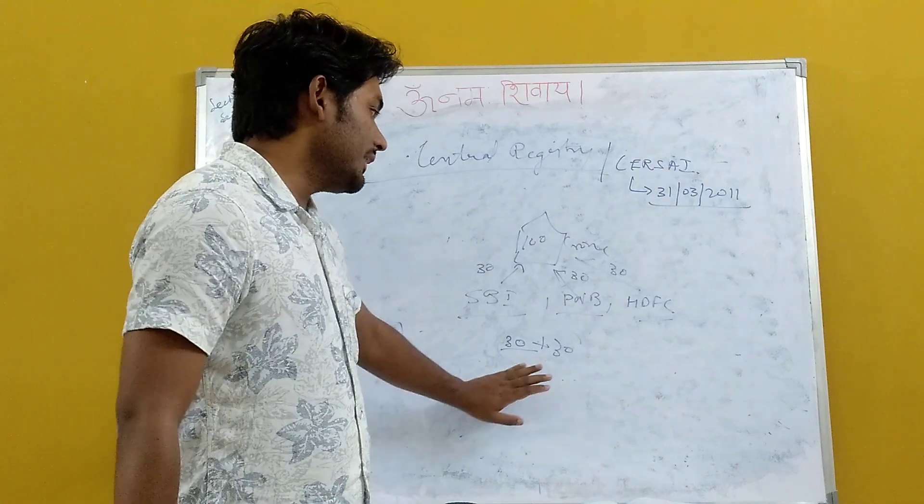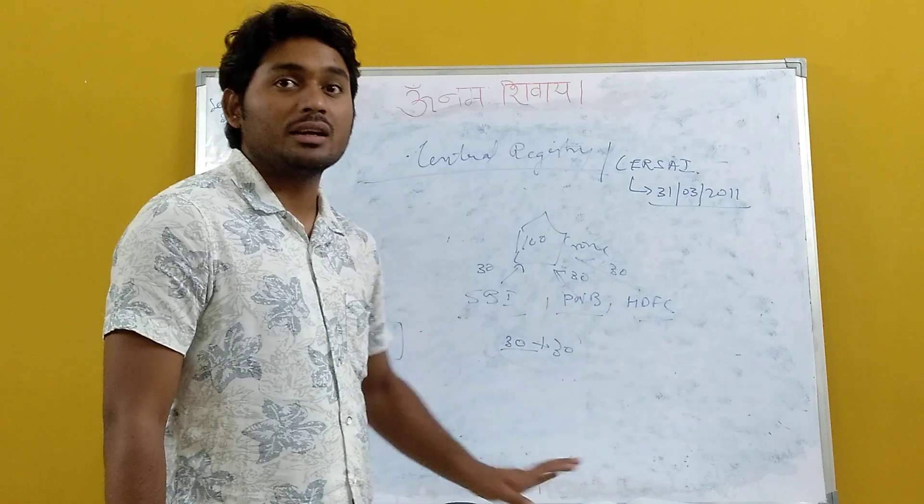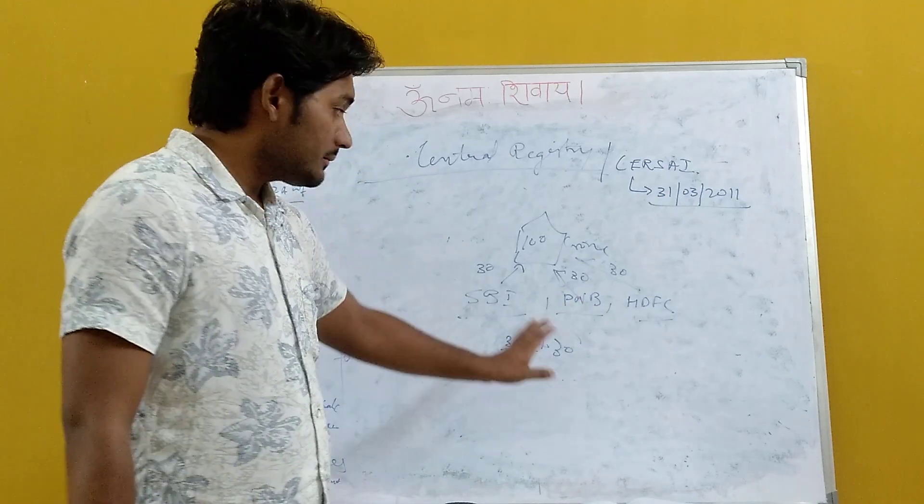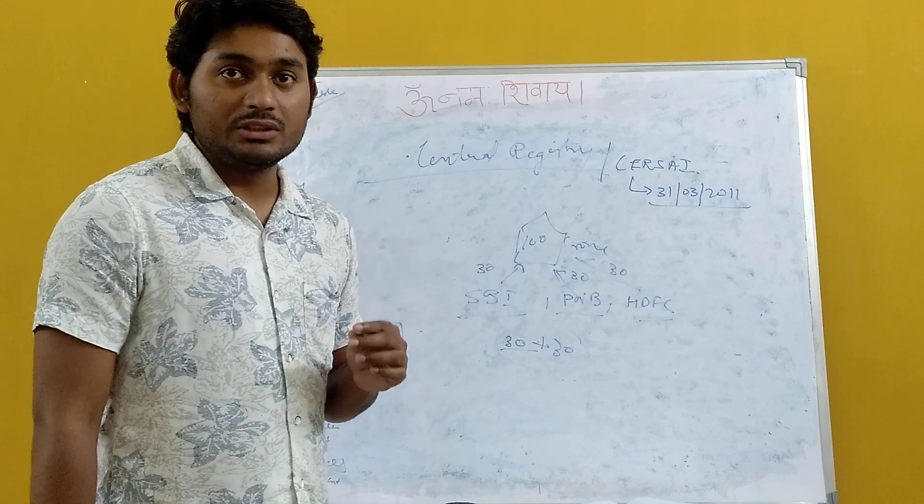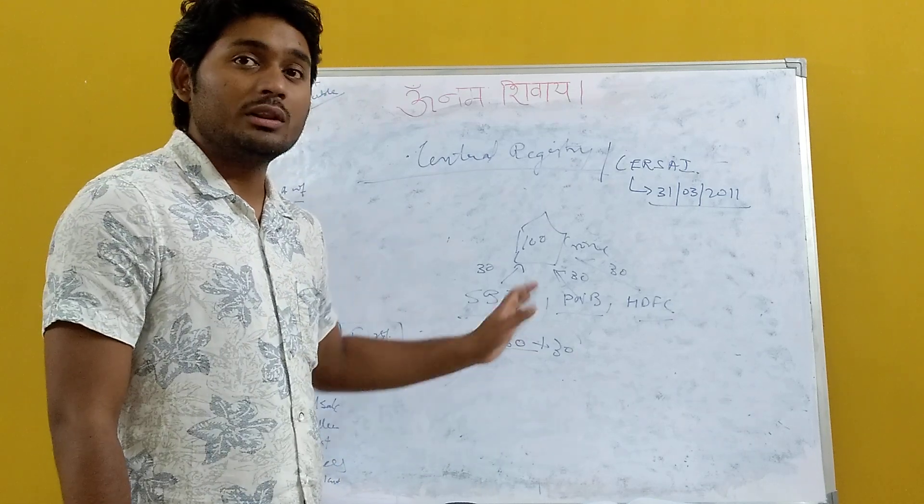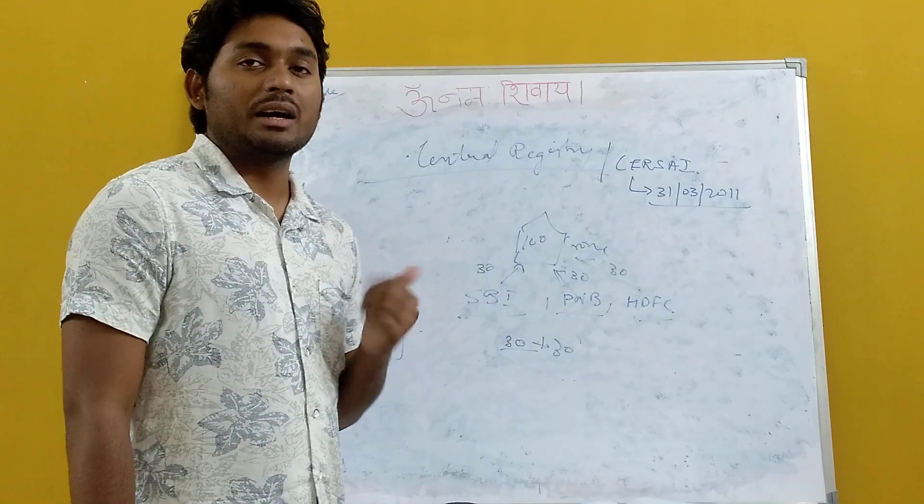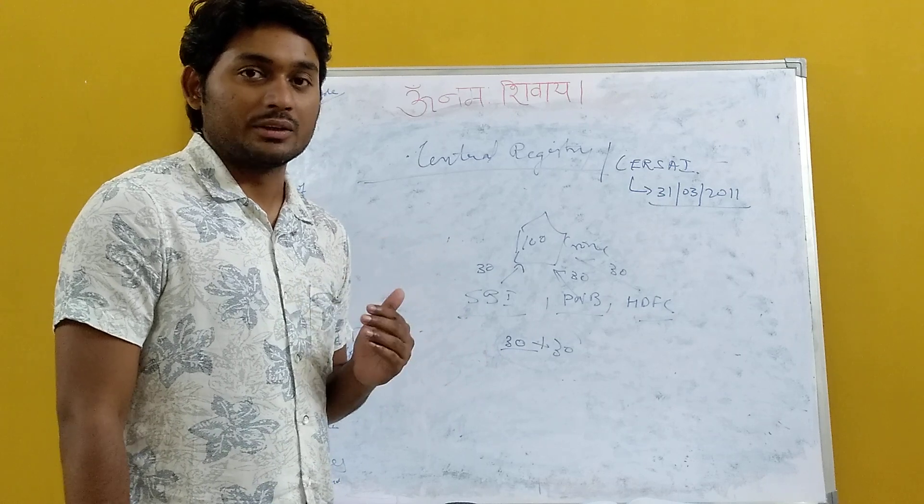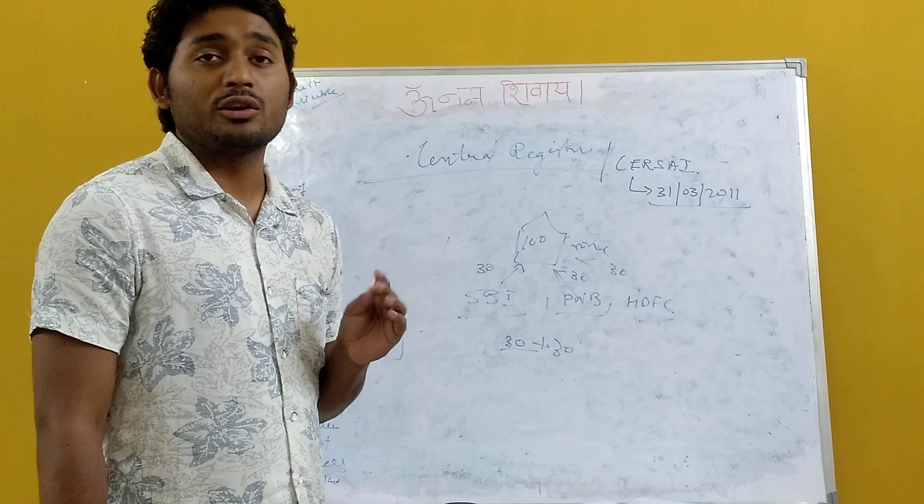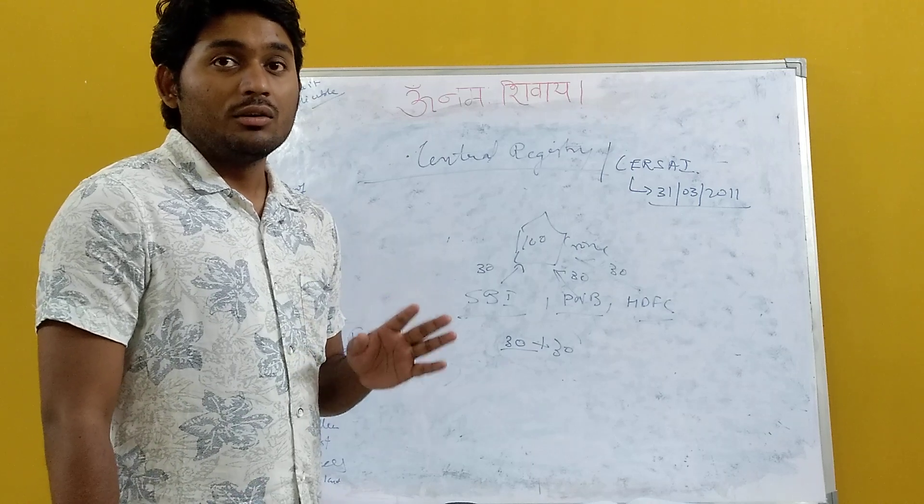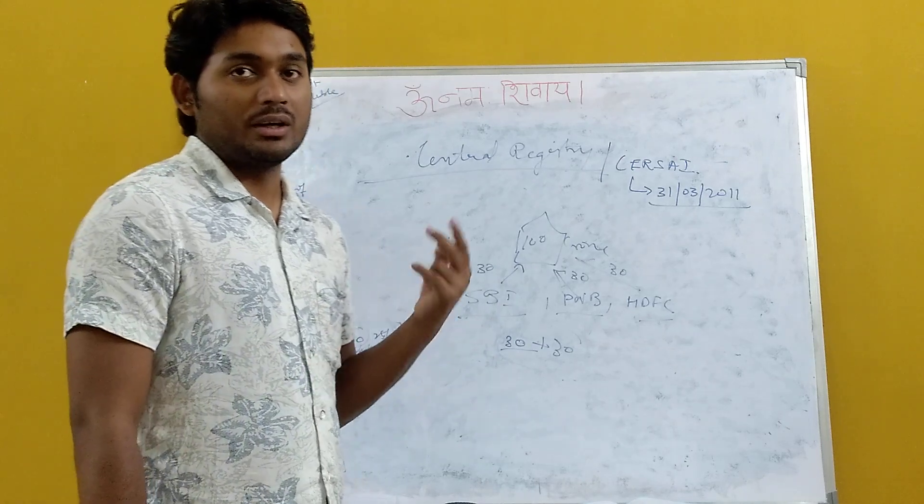If the outstanding is 100 crores, then we can give the SARFAESI Act notice. If SBI is only agreeing and these two banks are not agreeing, that means we cannot send the SARFAESI Act notice. That means in a consortium lending, minimum 60% of the outstanding amount, all the banks should agree. Then only we can send the SARFAESI Act notice. One more thing. If a bank has appointed an authorized officer to take possession of the property, that officer can take the help of the chief metropolitan magistrate or district magistrate to take possession of the property. These were the two points from the earlier chapter.